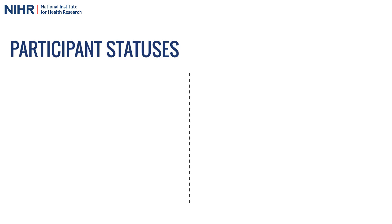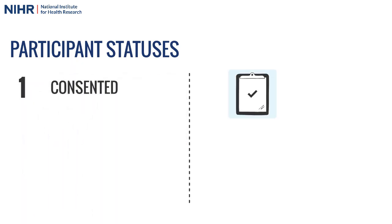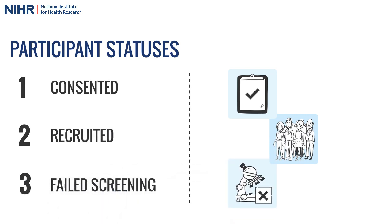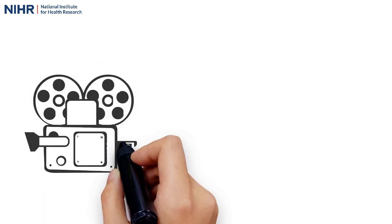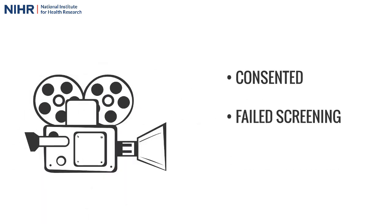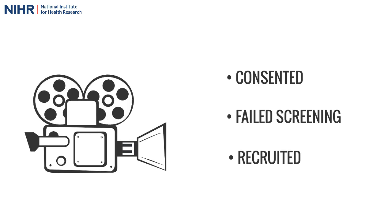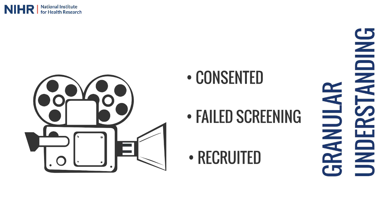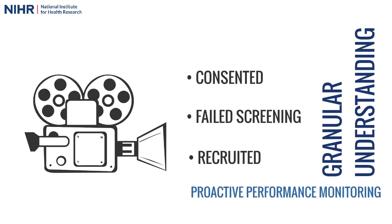The participant statuses we collect using the new research activity process are consented, recruited, and where appropriate failed screening. Capturing consented and failed screening statuses alongside recruited statuses gives us a more granular understanding of research activity on each study, as well as the NIHR CRN portfolio as a whole, and therefore supports proactive performance monitoring.